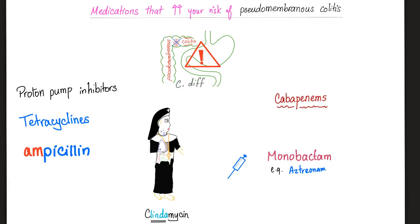Medications that can increase your risk of pseudomembranous colitis, also known as C. diff colitis or Clostridium difficile: proton pump inhibitors, tetracyclines, ampicillin, carbapenems, monobactams, and clindamycin — all of these can increase your risk of C. diff colitis.